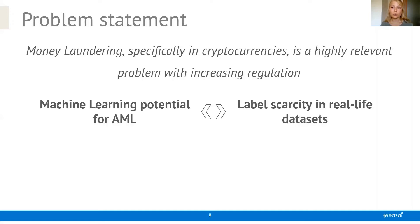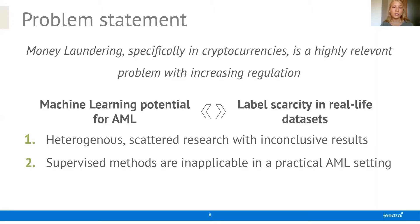However, labels in real life data sets are extremely scarce. That's because the data is very sensitive but also just because of the complexity of labeling for money laundering. This leads to a very heterogeneous scattered research landscape and to results being very inconclusive but it also means that supervised methods in general are inapplicable in a practical AML setting because we just can't rely on having a thoroughly labeled data set.